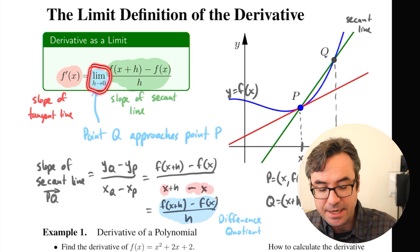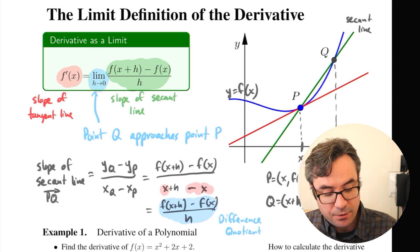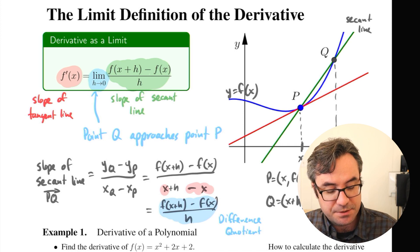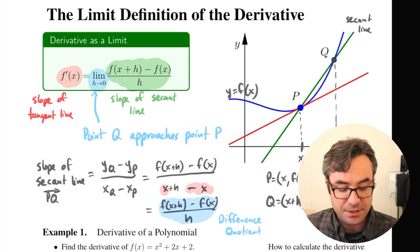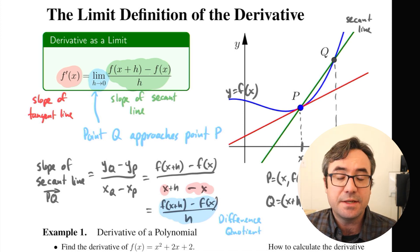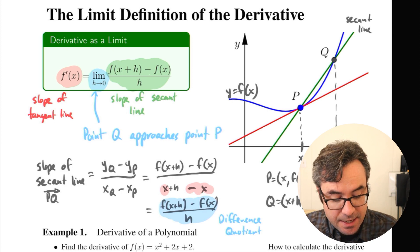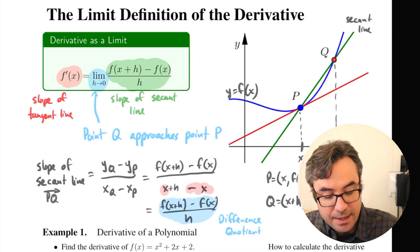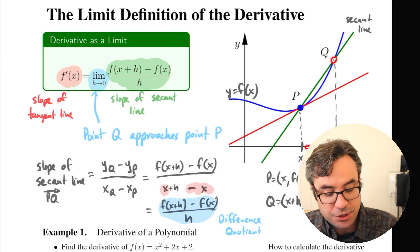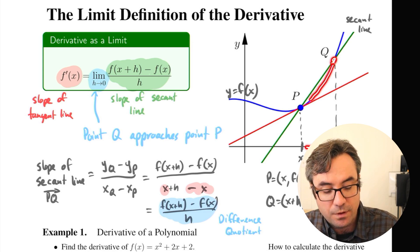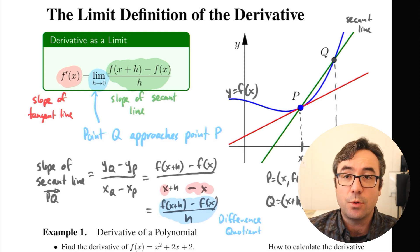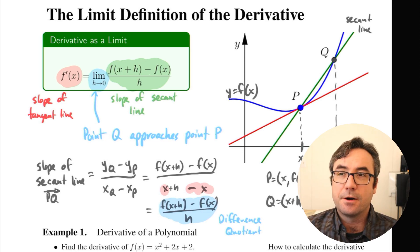As H gets really small and goes to zero, we're adding on less and less to x, so point Q moves along the curve and gets closer and closer to point P. That's really how our derivative is defined: it's the slope of the secant line, where we then take the limit as point Q approaches point P.